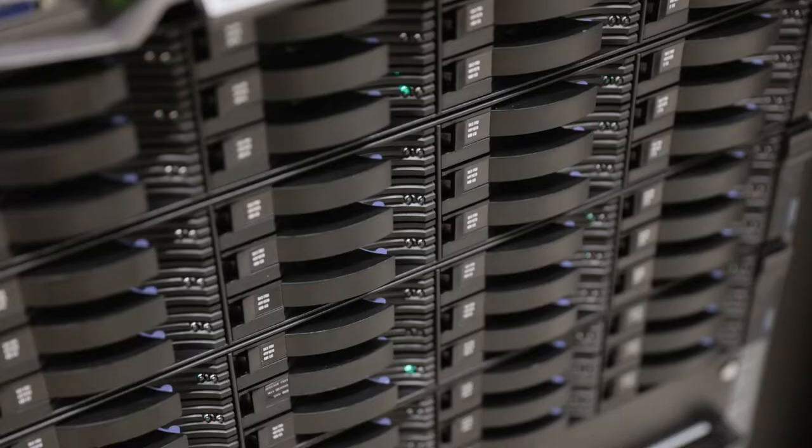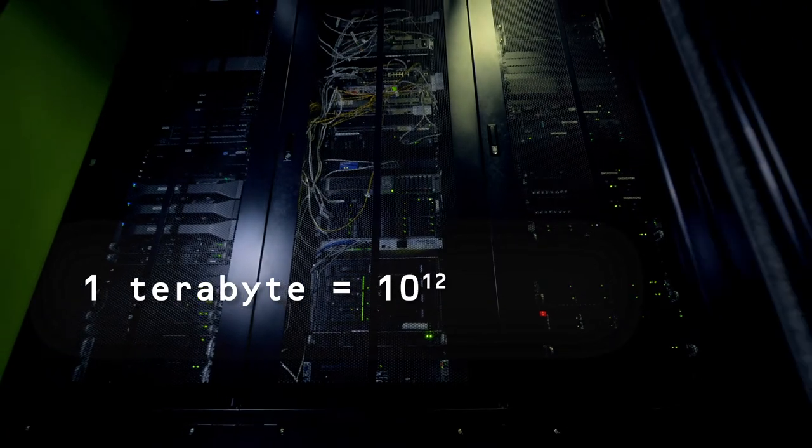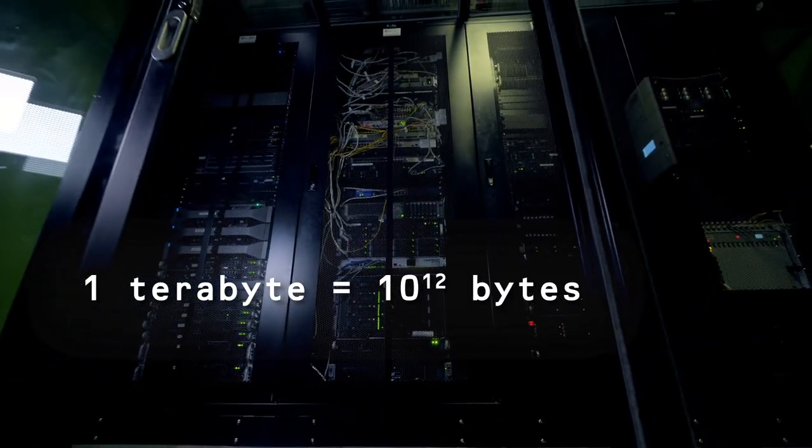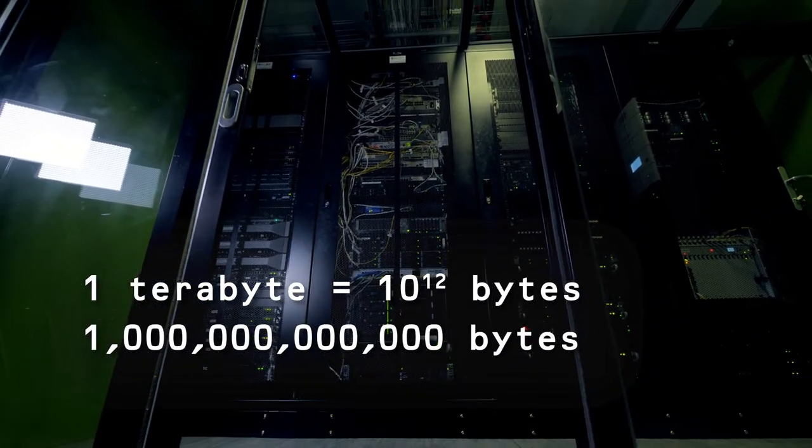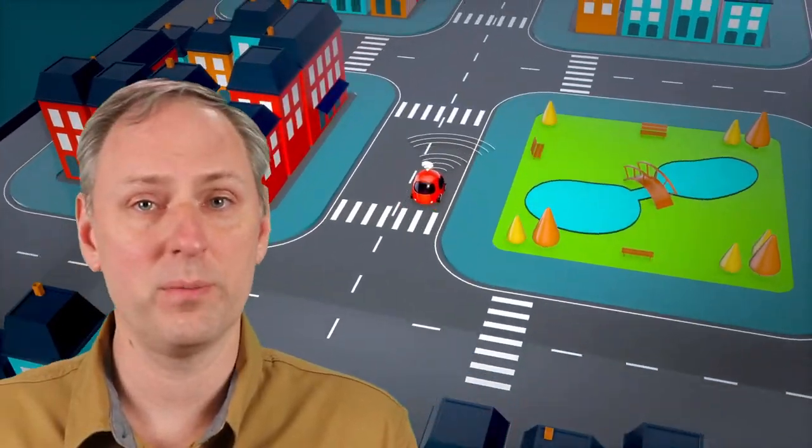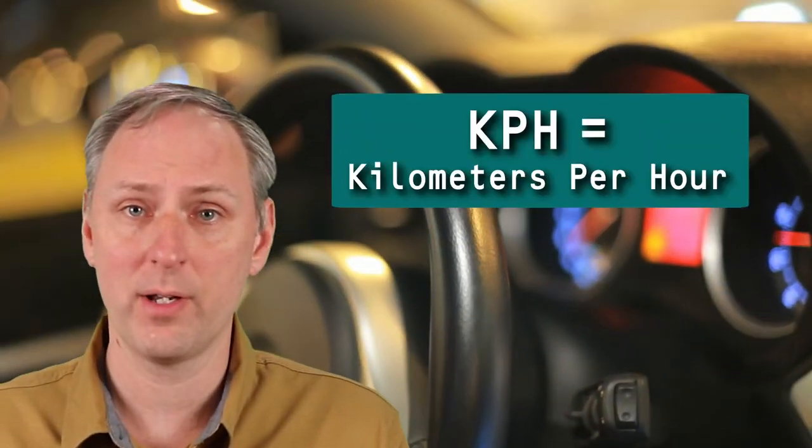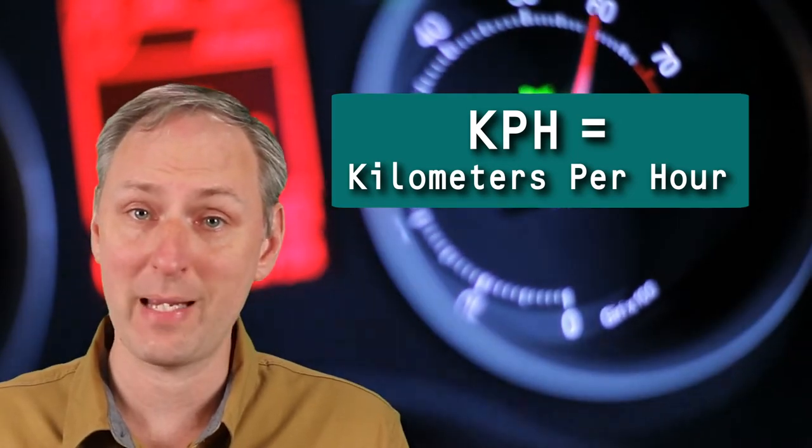You may have heard these terms when talking about computers. For example, hard drives can be terabytes in size, meaning they hold 1 times 10 to the twelfth bytes or one-trillion bytes. Another example, self-driving cars measure speeds in kilometers per hour, that is, thousands of meters per hour.